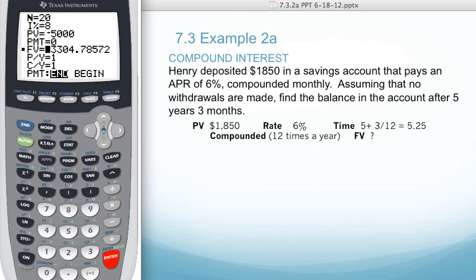In this case, the present value will be $1,850. The rate will be 6%. The time in years will be 5 plus 3 out of 12, so we can make that a yearly amount, which would be 5.25.